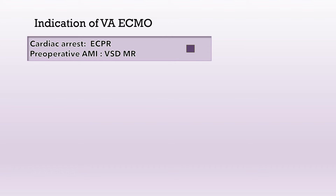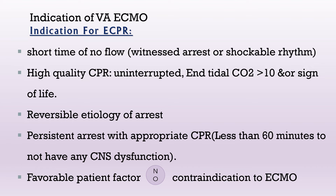An important indication is cardiac arrest — extracorporeal CPR (ECPR). It may also be used for mechanical complications of acute MI, such as ruptured ventricular septal defect or ischemic mitral regurgitation. Not all cardiac arrest patients should receive ECMO. Key criteria include: short no-flow time with witnessed arrest, shockable rhythm, high-quality uninterrupted CPR, end-tidal CO2 greater than 10 during CPR, signs of life, reversible etiology such as hypoxemia or hypothermia, and arrest duration less than 60 minutes to avoid CNS dysfunction — with no contraindication to ECMO insertion.